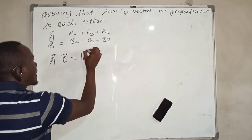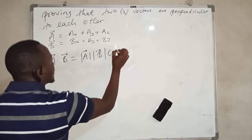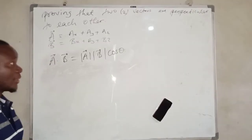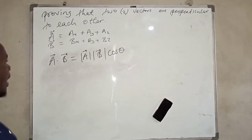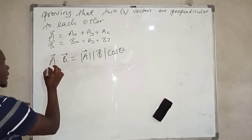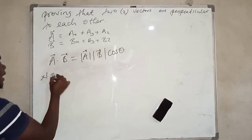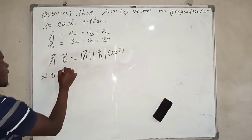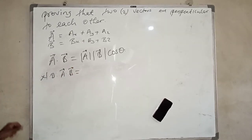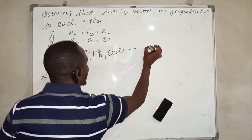We know that if we compute vector a dot vector b, the result is the magnitude of a times the magnitude of b times cos theta, where theta is the angle between the two vectors. Let us call this equation one.